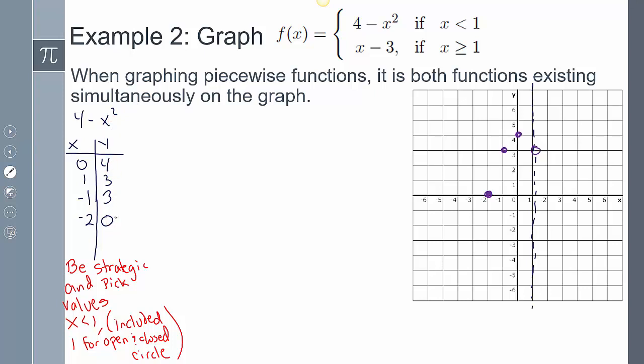So now graphing it, we said that on 1 it has to be an open circle, which is why I have an open circle on 1 where it was 3. But the rest of the values I was able to plot normally. And so then I can draw my graph. There's that part of the graph.